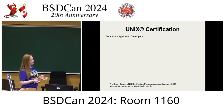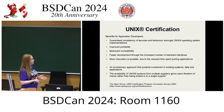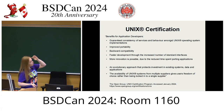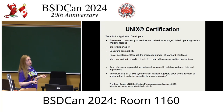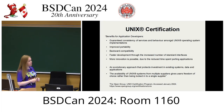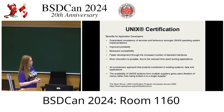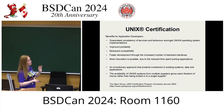Benefits for application developers include: guaranteed consistency of services and behavior among Unix OS implementations, improved portability, backward compatibility, faster development through increased standard interfaces, more innovation, and an evolutionary approach that protects investment in existing systems, data, and applications. The availability of Unix systems from multiple suppliers gives users freedom of choice rather than being locked into a single supplier. This is the Open Group promoting their certifications, including the Unix certification, which is slightly different than POSIX.